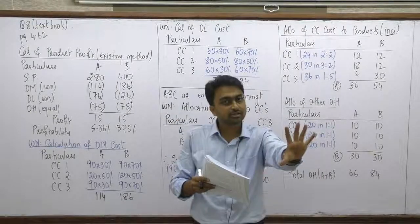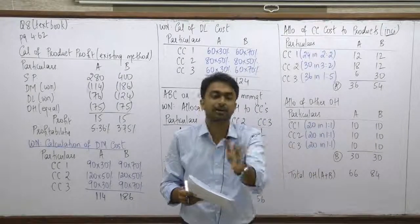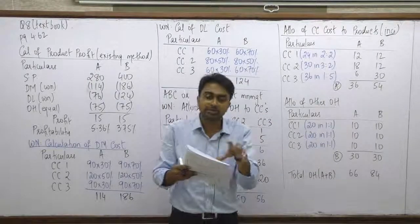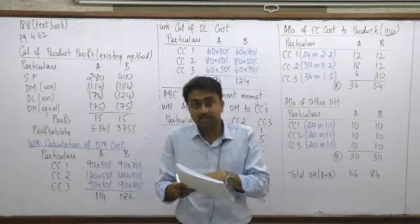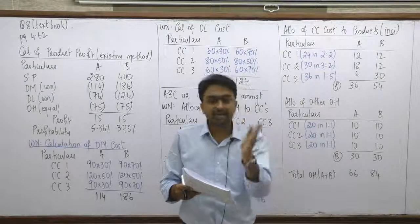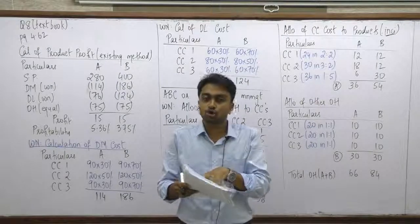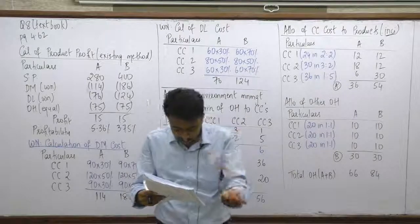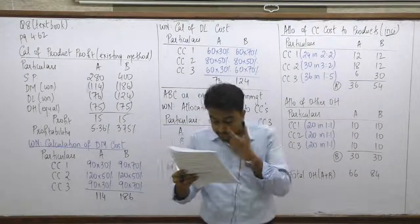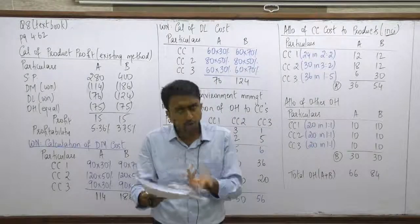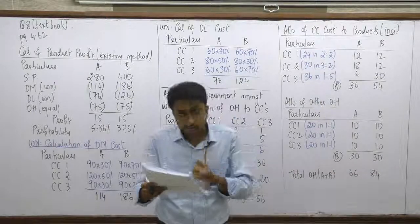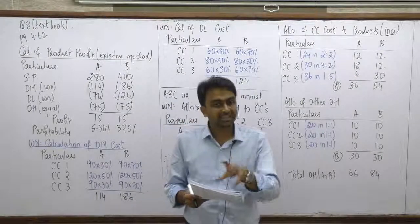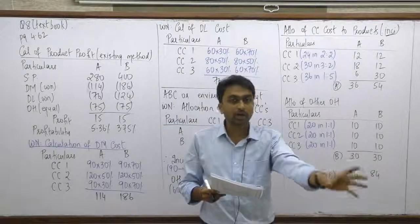Out of the overheads, some element is because of waste generation and some is for normal overheads. The cost center and product-wise information of solid waste produced is given. Whatever the incinerator costs of ₹90 per kg are, these have to be allocated among the products depending on the waste generated — which was not happening before, when all costs were allocated on an equal 50/50 basis.